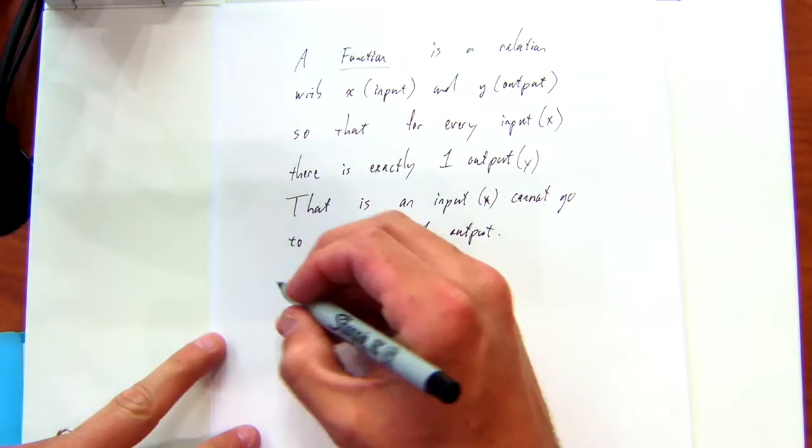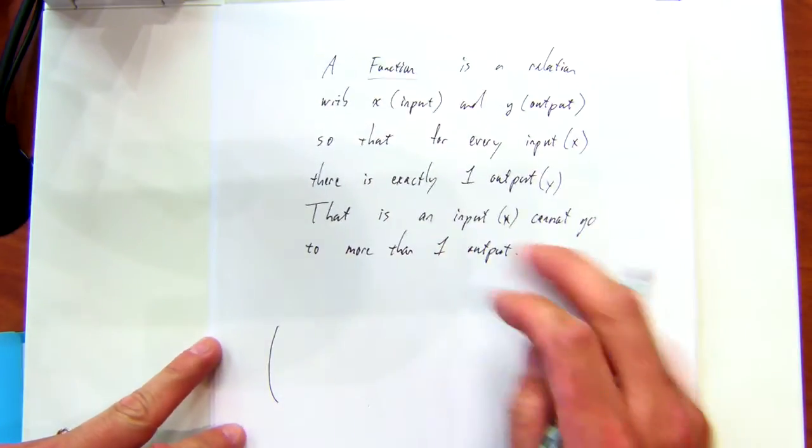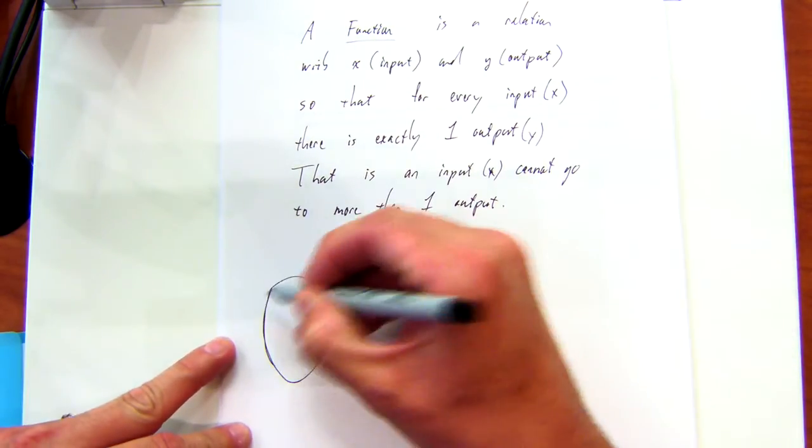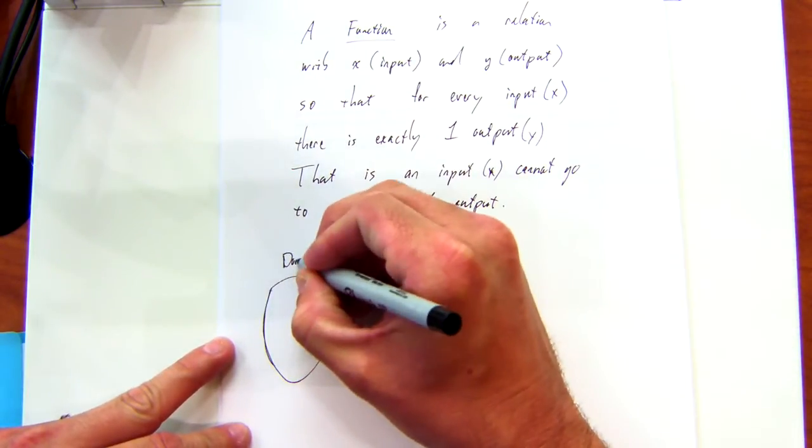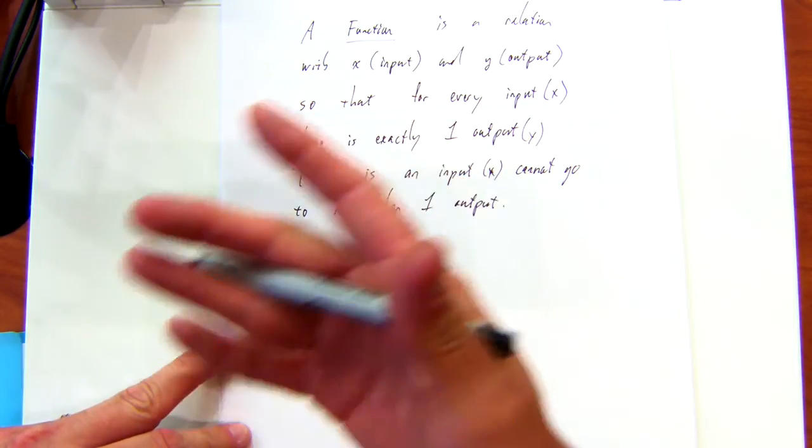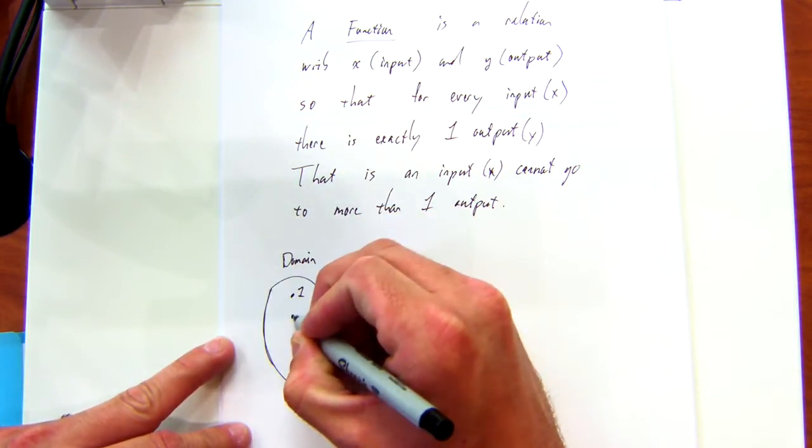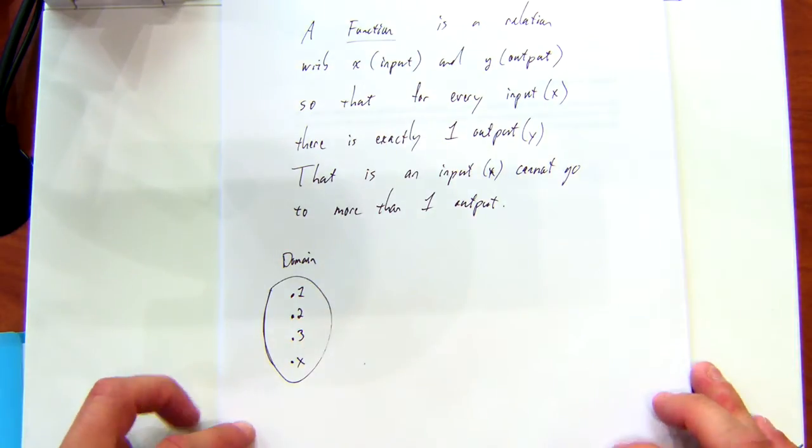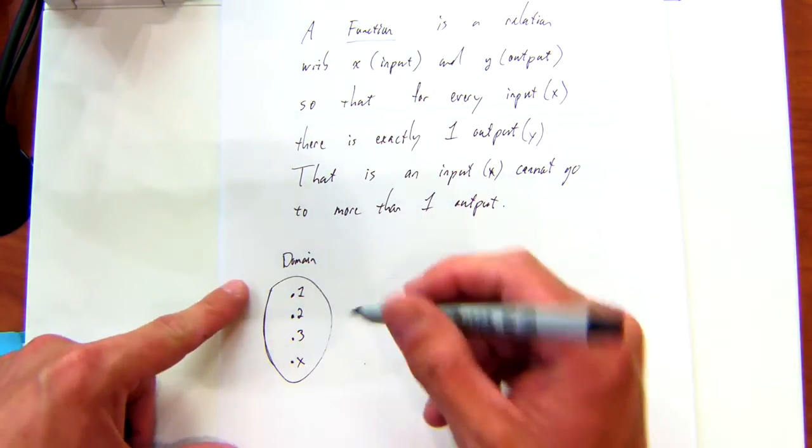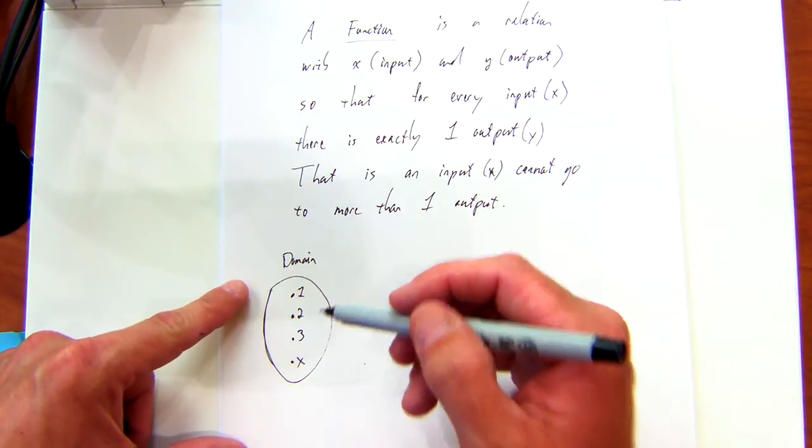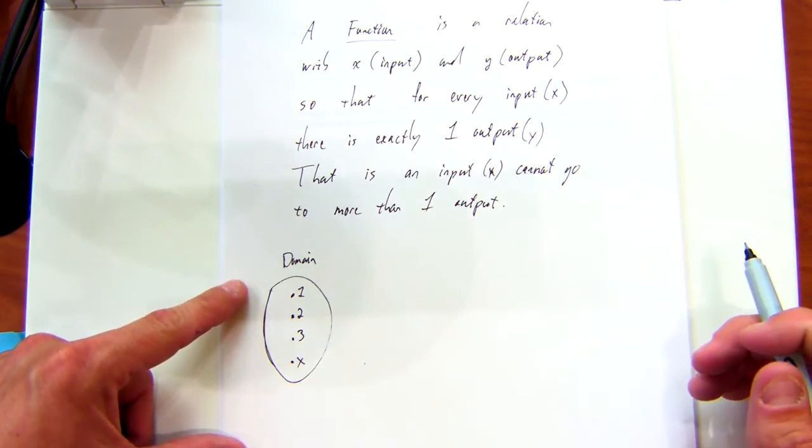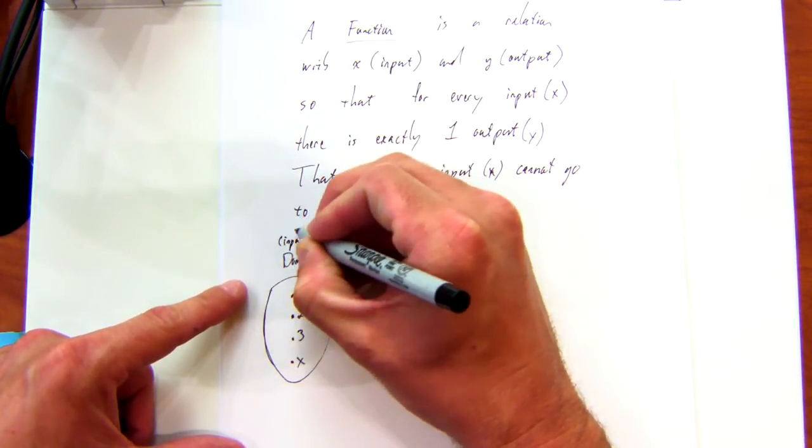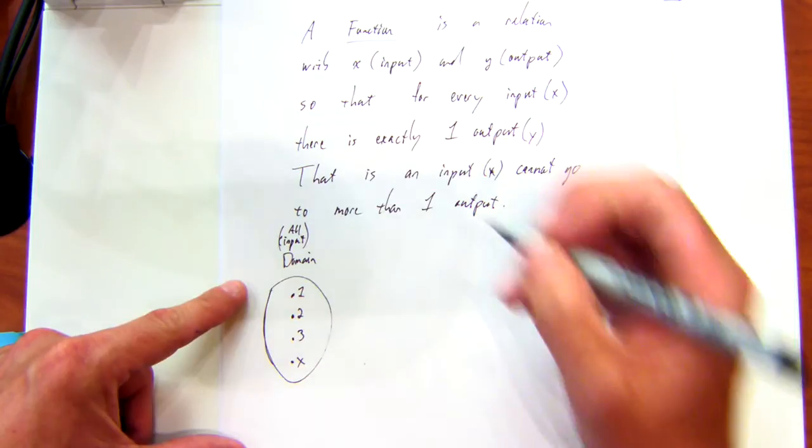A couple of examples. So a lot of times on these arrow diagrams, this domain, now remember the domain was the set of all the x's, right? Let's just put a few numbers in here and an x. So what is the domain? Is the domain my input or my output? It's the set of all the inputs. So this is all my inputs.